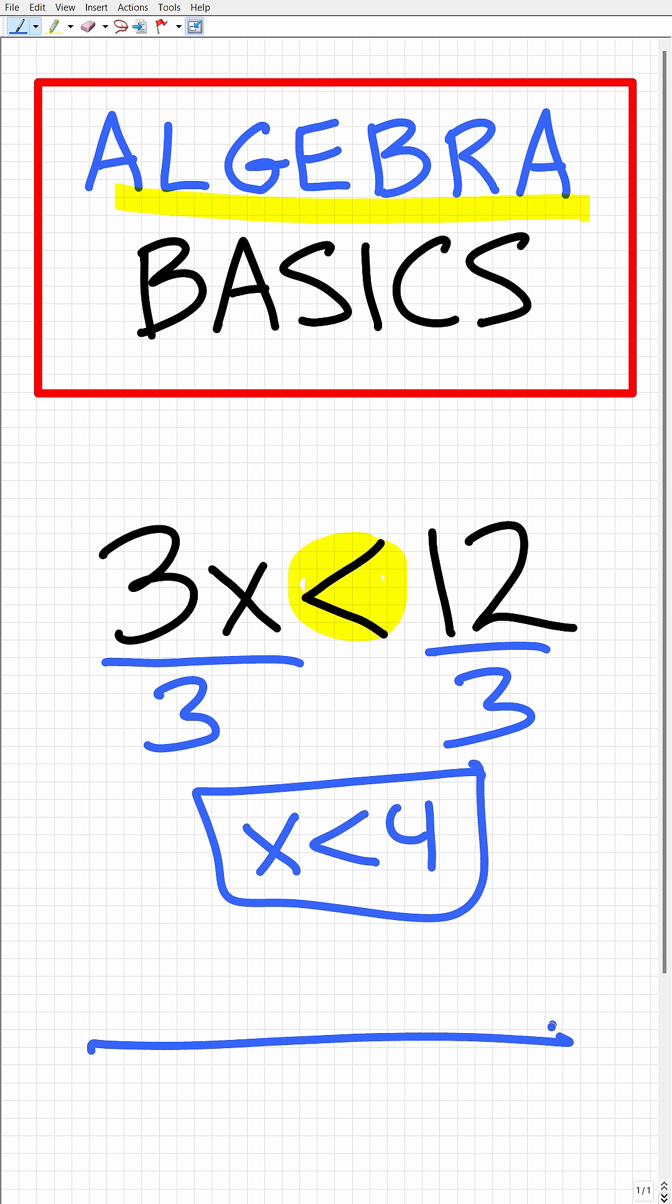And so then of course we can graph this by putting a number line right here. We put our 0 right here, or 4 right here, and all numbers less than 4 are this way.